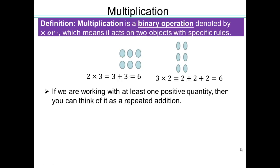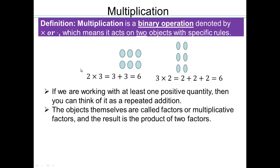If we're working with at least one positive quantity, then you can think of it as repeated addition like we saw here. The objects themselves are called multiplicative factors, or just factors. So for example, 2 is a factor of 6, and 3 is a factor of 6. So 2 and 3 are called multiplicative factors, or factors of 6. And 6, the result of the multiplication, is called the product of 2 and 3.